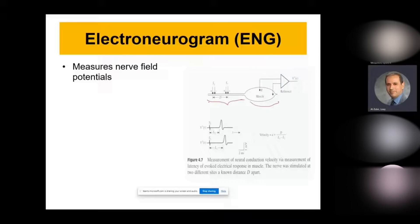What we would like to do with the ENG, we're going to use two needle electrodes placed a specific distance apart from each other on S1 and S2. Then we're going to stimulate each one of them. The distance between them is D and then we stimulate each one of them.